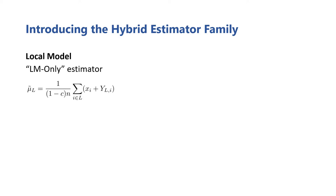At this point, we're almost able to define our hybrid estimator. We just need to define one more local model estimator first, which we call the LM-only estimator. It's very similar to the full LM baseline estimator, except now, instead of using the data of all the users, we only use the data of the LM users. The reason this wasn't proposed as a baseline estimator is because it has strictly higher error than the full LM estimator.